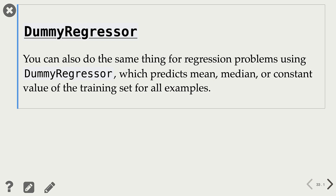We can also do the same thing for regression problems. Scikit-learn's baseline model for regression problems is called the DummyRegressor. In the case of classification, we predicted the most frequent label from the target column, but that doesn't really make sense in the context of regression, where the target is continuous and values in the target column are going to be fairly unique. So in case of regression, the baseline usually predicts the mean, median, or some constant value of the training set for all examples.